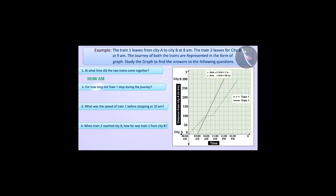For how long did train 1 stop during the journey? The graph of train 1 is a horizontal line from 10 a.m. to 10:42 a.m. There has been no change in the distance traveled by train 1 during this time. Therefore, we can say that train 1 stopped from 10 a.m. to 10:42 a.m. during the journey, which means train 1 stopped for 42 minutes.